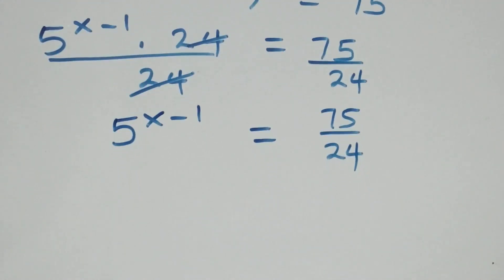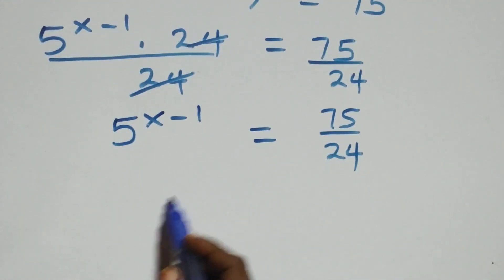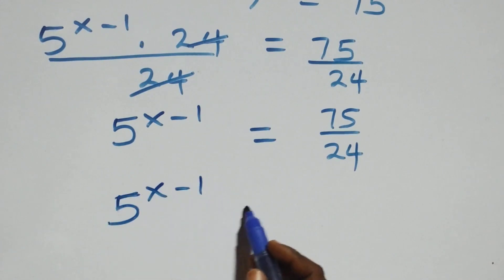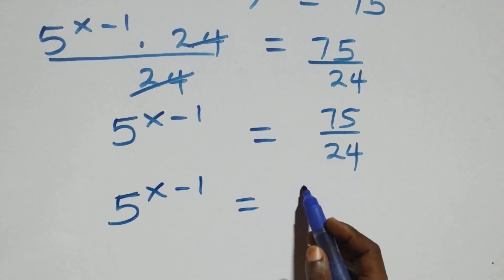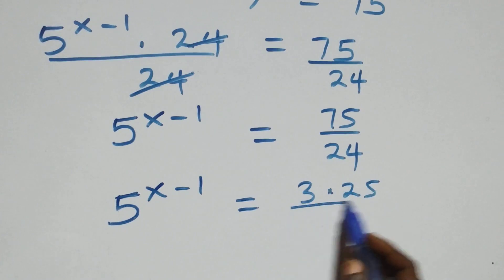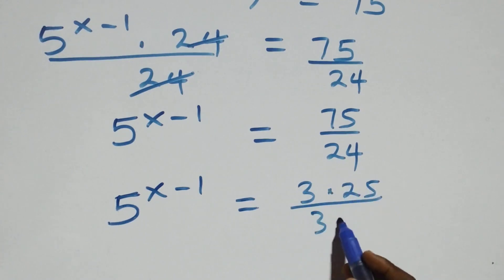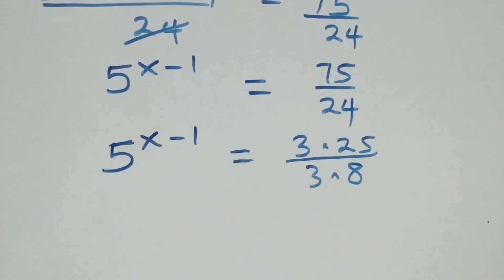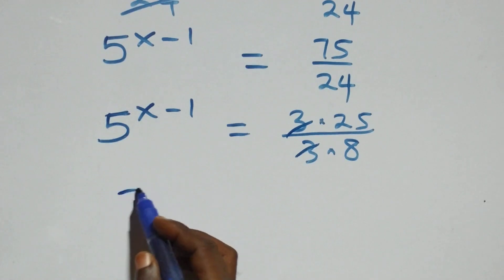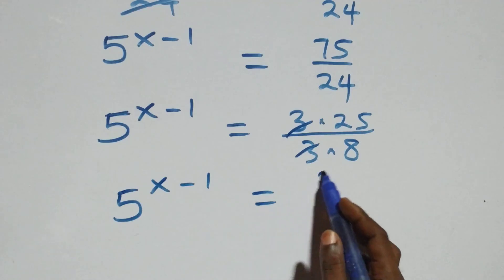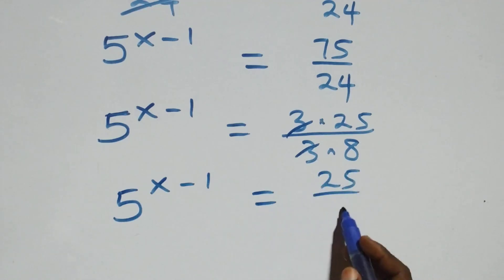We simplify 75 over 24: writing 75 as 3 times 25 and 24 as 3 times 8, the 3s cancel, giving 5 raised to the power x minus one equals 25 over 8.